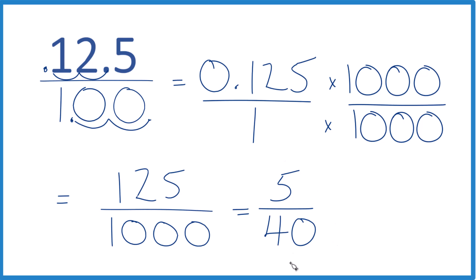We end up with 5 fortieths, but we can simplify that even further. Five goes into itself once, five goes into 40 eight times. So we end up with a fraction, 1 eighth.